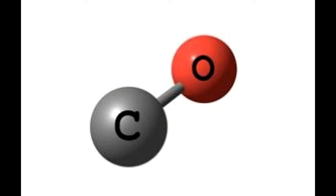In CO, carbon has four electrons in its outermost atomic orbital, whereas oxygen has six electrons in its outermost atomic orbital. The carbon atom and the oxygen atom are bonded by two covalent bonds and one dative or coordinate bond, with oxygen providing a lone pair of electrons to form the dative bond so that their octet is complete. The bond length of the CO bond is 0.112 nm.